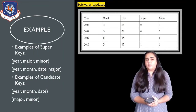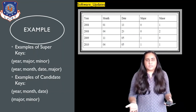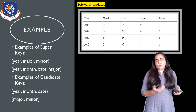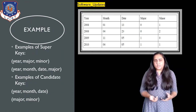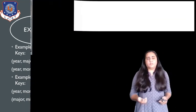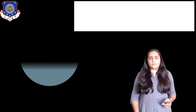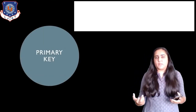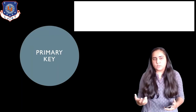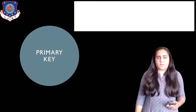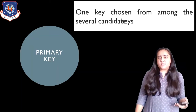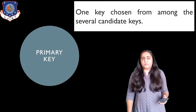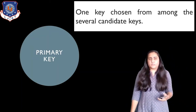There can be many super keys, and from those you can create many minimal super keys, which are candidate keys. From the candidate keys, we select one key that we actually want to use, which is known as the primary key. The primary key is one of the keys chosen from among the several candidate keys that are available.